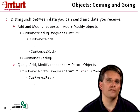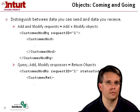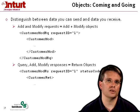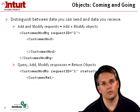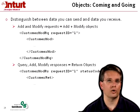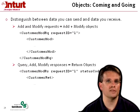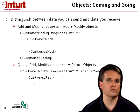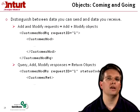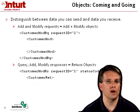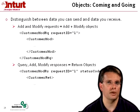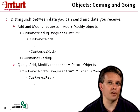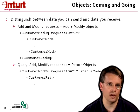We think of everything within the XML as an object, and we use these objects to distinguish between data you can send and data you can receive. An add or modify request will require an add or modify object — for example, a customer mod request contains a customer mod object. Query, add, and modify responses all give you a return object. If you're doing anything with a customer, the response contains customer ret objects — multiple for a query, or a single one for a modify or add.